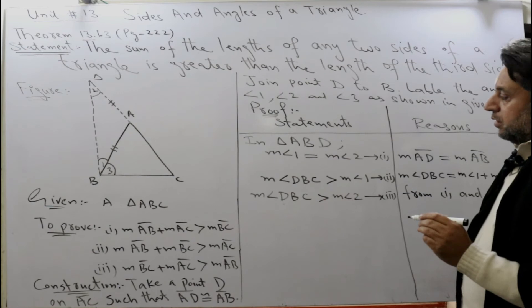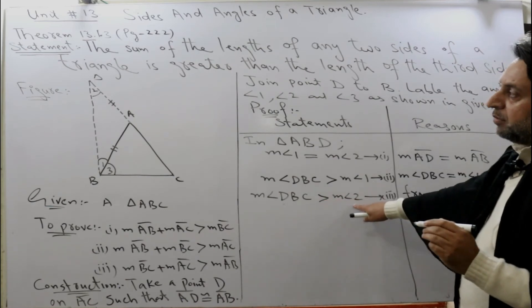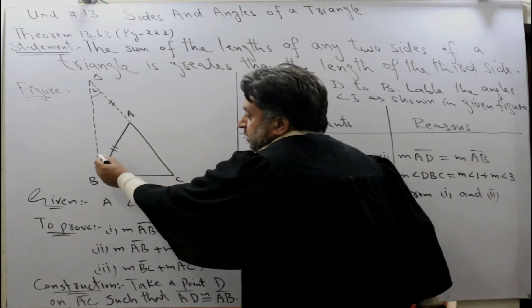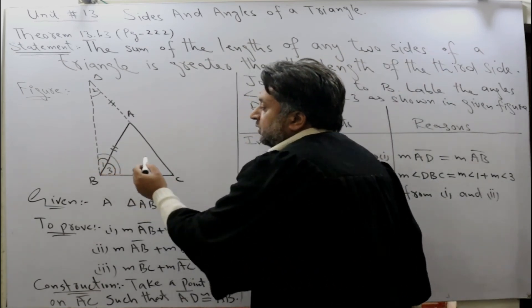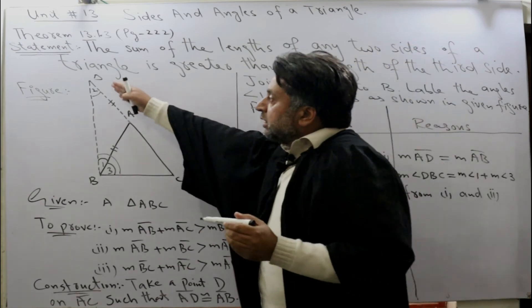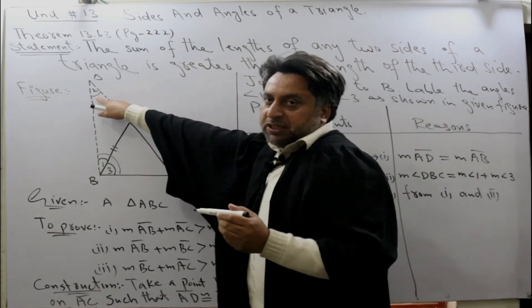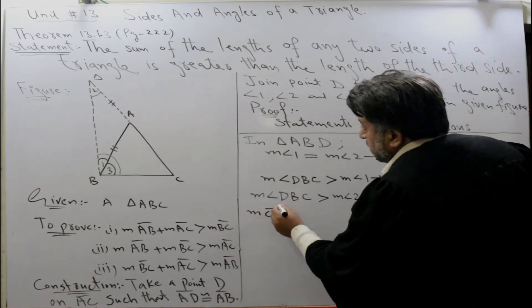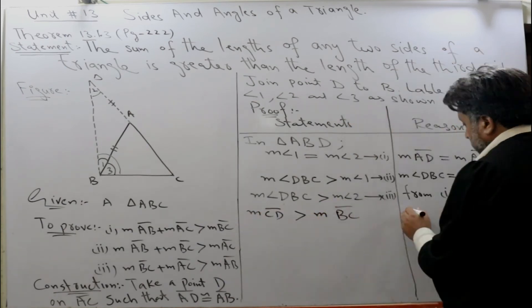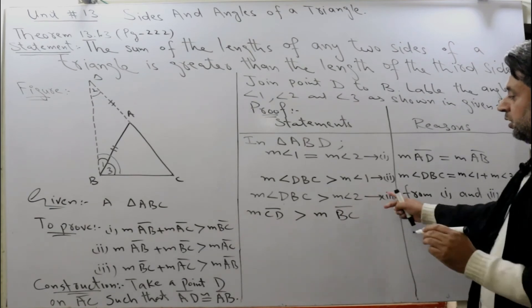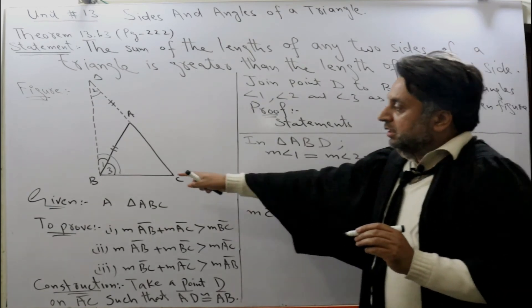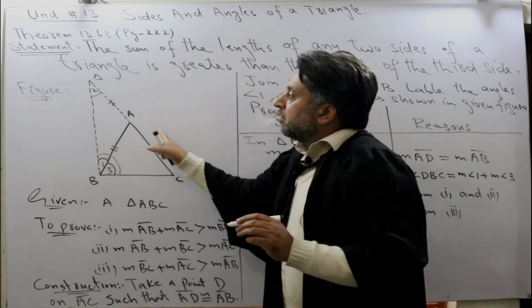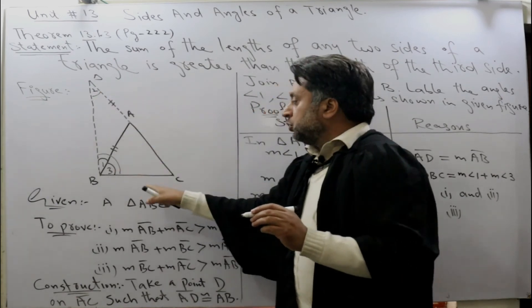When measurement of angle DBC is greater than measurement of angle 2, it means that the opposite side of this angle, DC, is always greater than the opposite side of angle 2, which is BC. When this angle is greater than that angle, the opposite side of this angle is greater than the opposite side of angle 2.